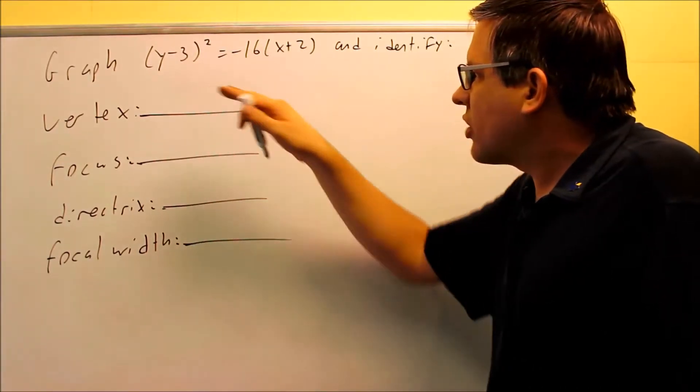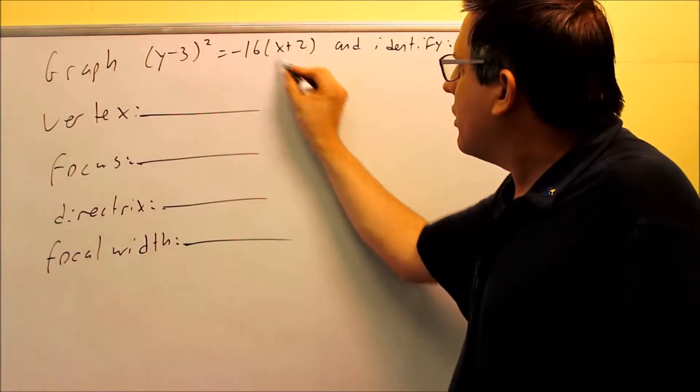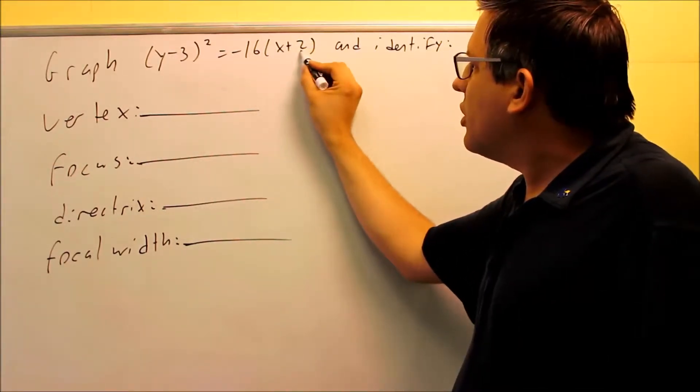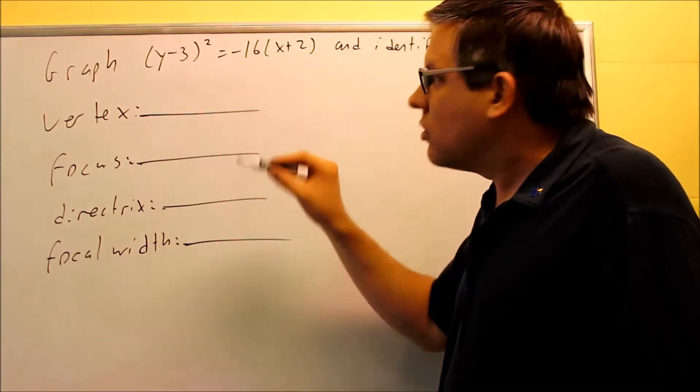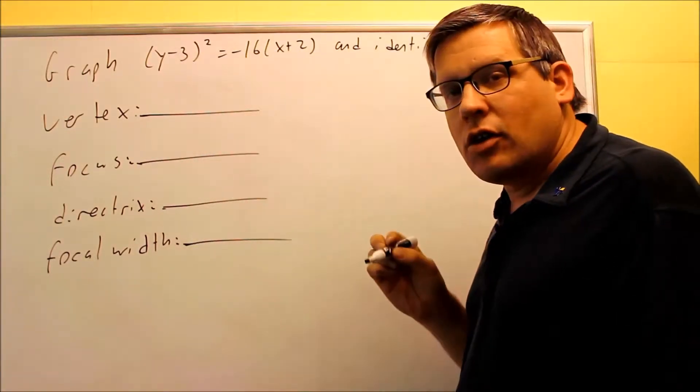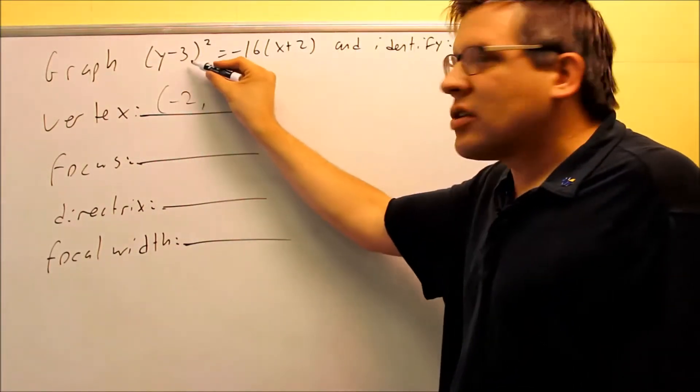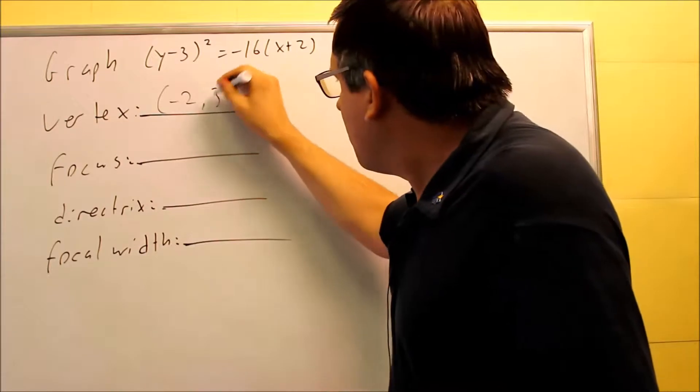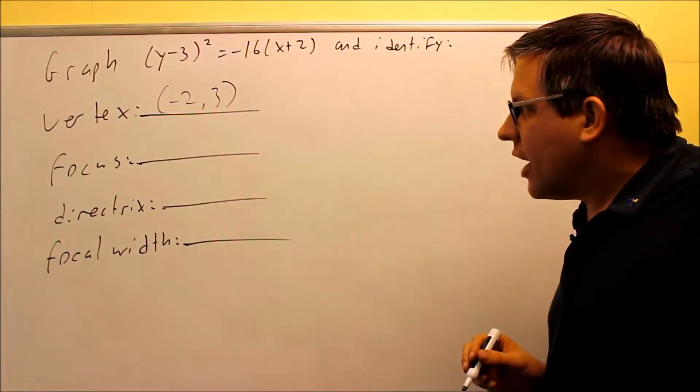These extra things inside are what's going to allow us to find the vertex. When you find the vertex, you want to take the opposite sign of the number that you see inside here. The x always comes first, so let's do that. Opposite sign of plus 2 is negative 2. Opposite sign of negative 3, positive 3. So I have negative 2 and positive 3. That's my vertex.